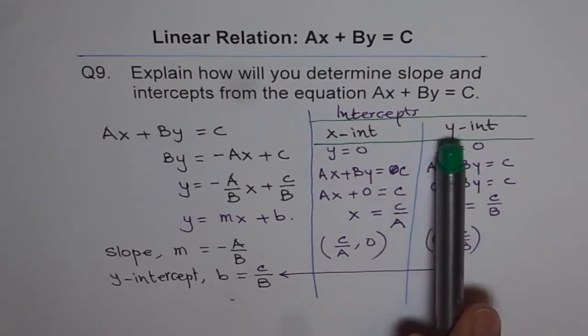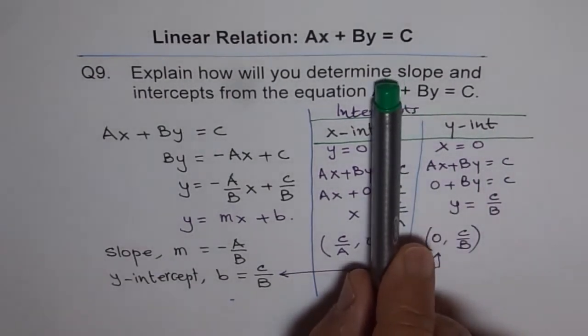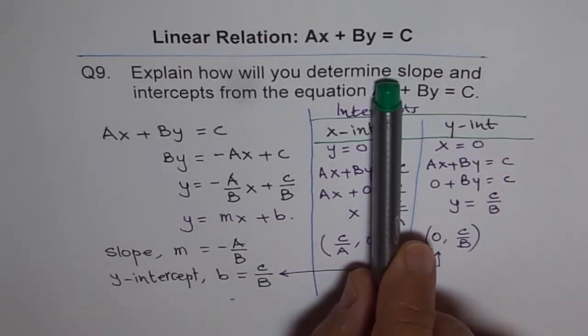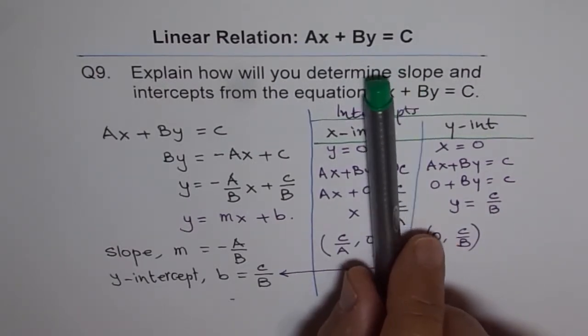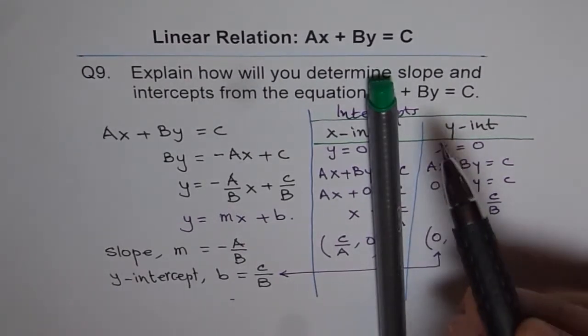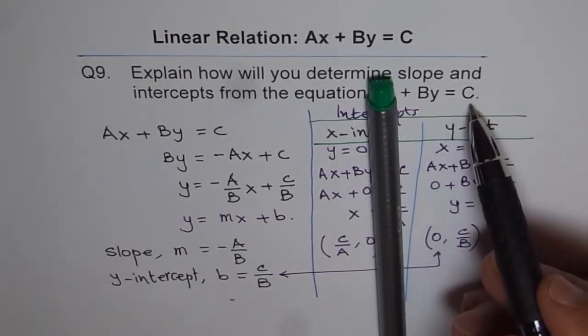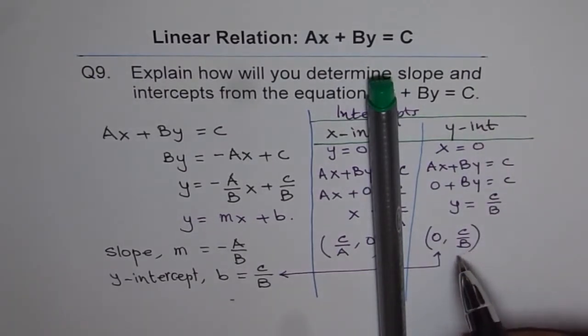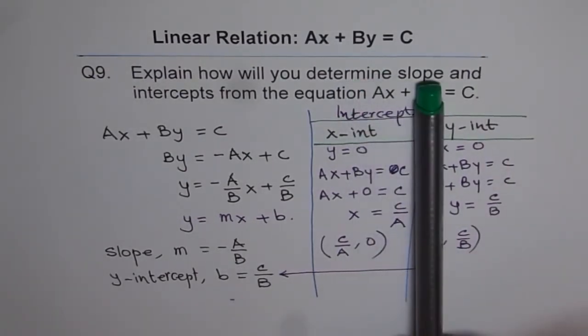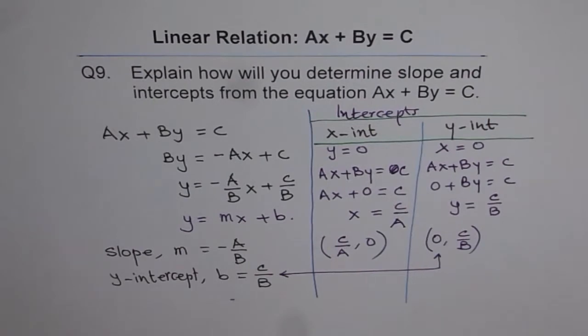To find Y-intercept, hide the other term. So you get BY equals to C. So Y is equals to C divided by B. So when you hide this term, you get BY equals to C. So Y is C divided by B. That is the result. So it is so simple. Hide and get the other point.